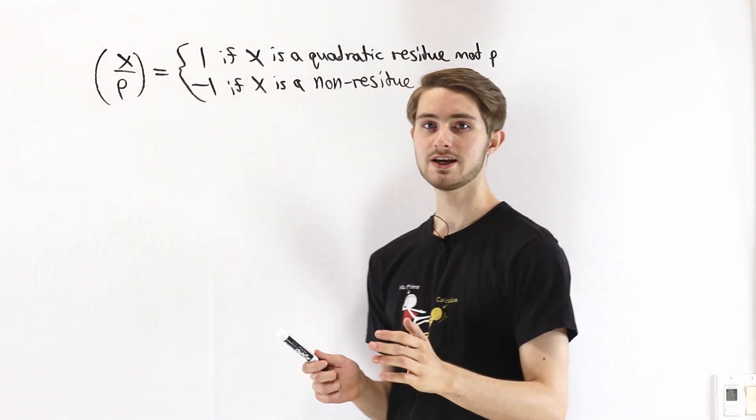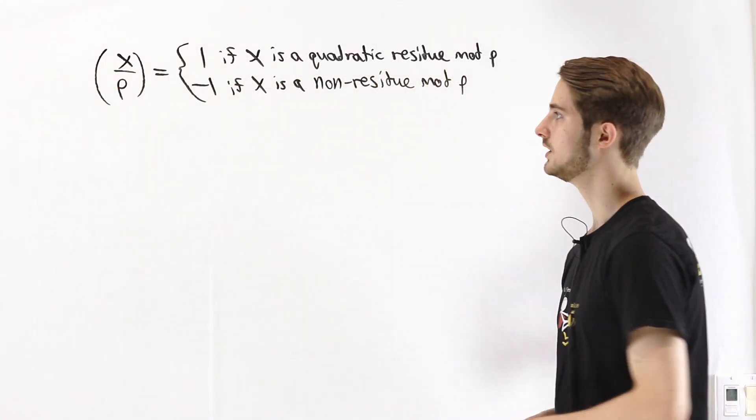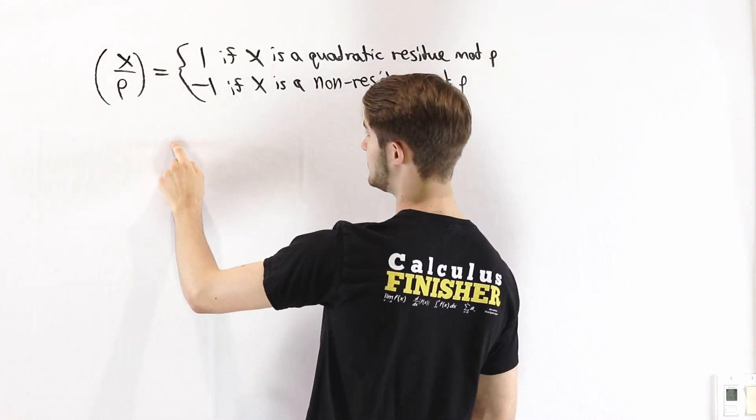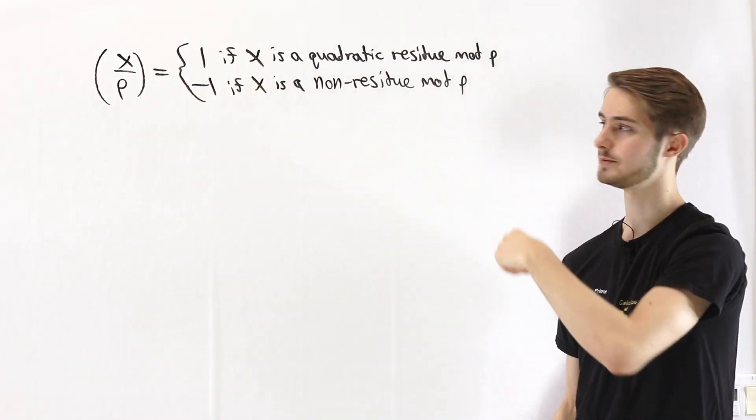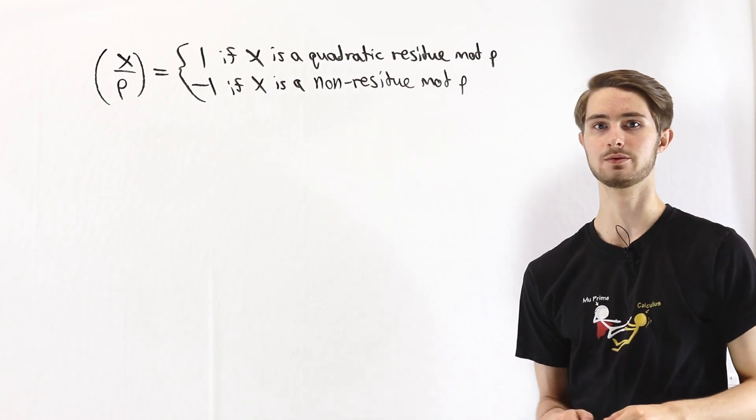We're going to prove the multiplication rule for the Legendre symbol. Remember, the Legendre symbol (x/p) gives us 1 if x is a quadratic residue mod p, and -1 if it's a non-residue.